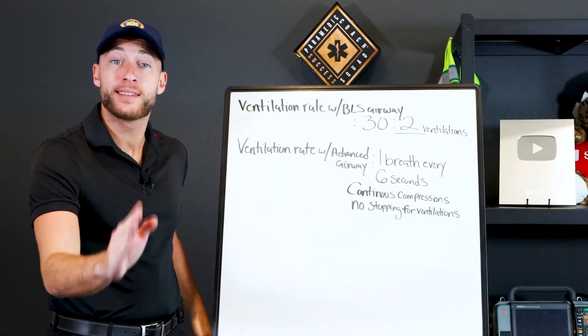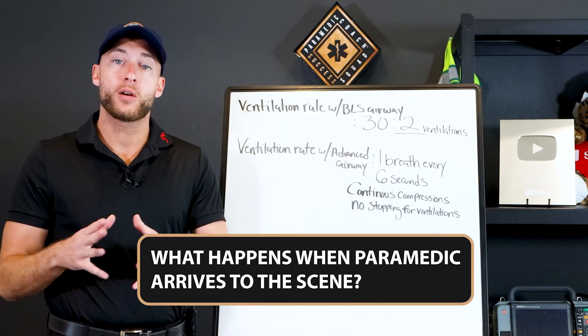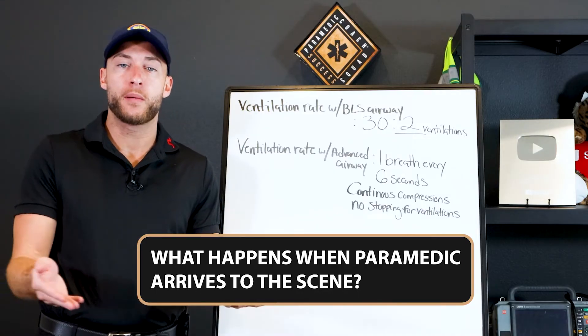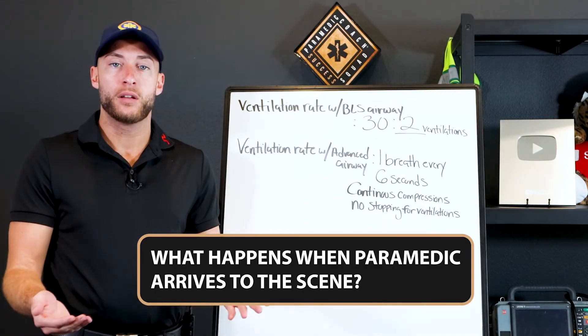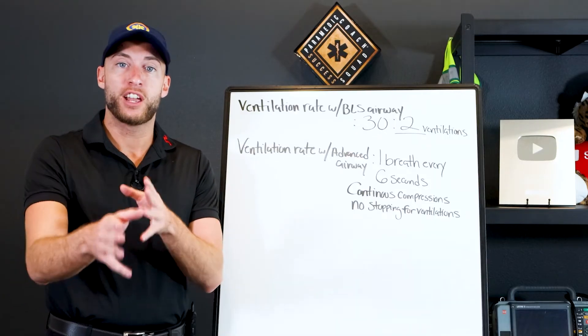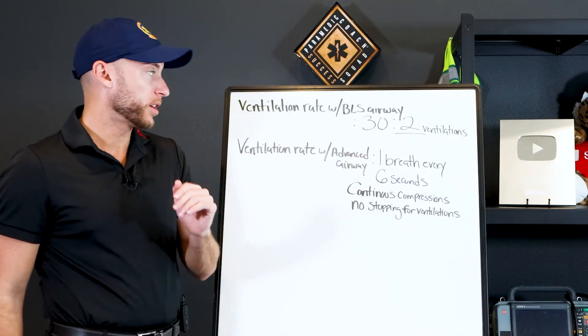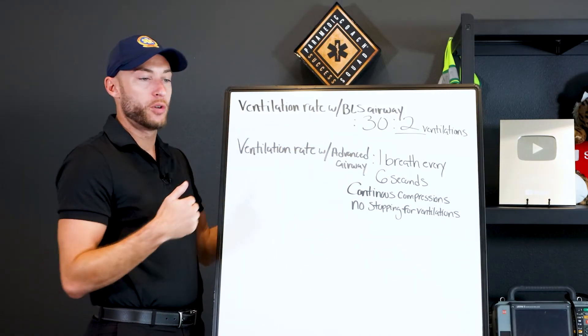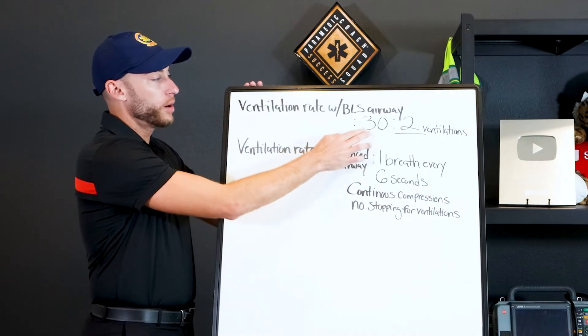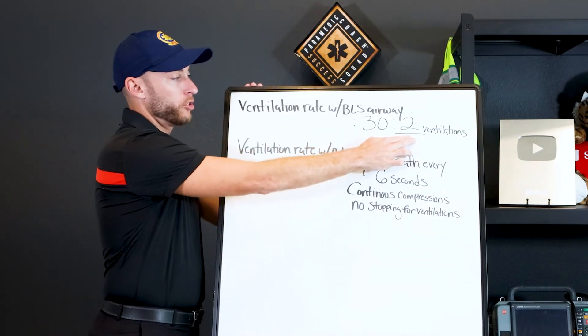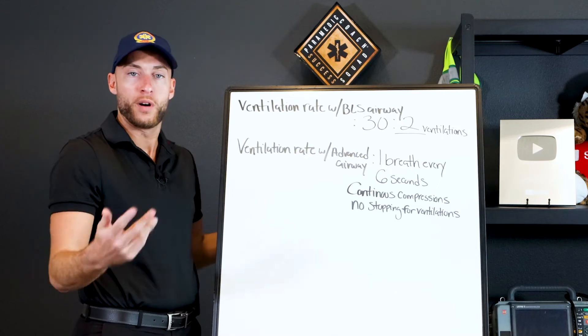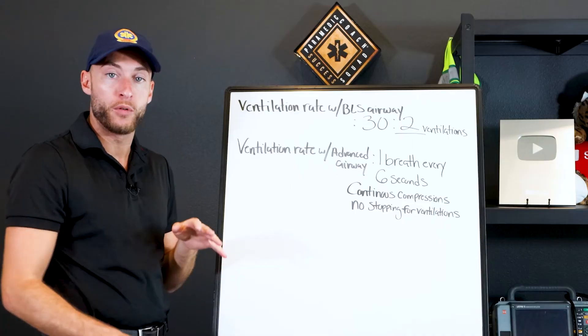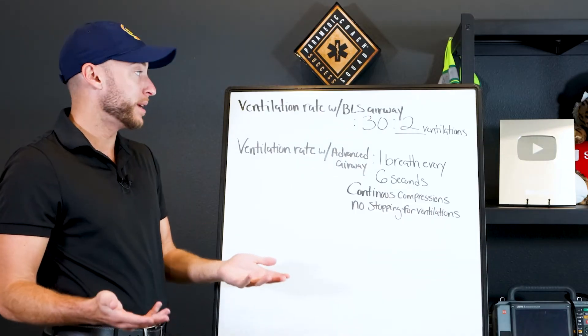So now with that being said, what happens when the paramedic arrives on scene? You're the EMT working with the paramedic. What happens when the paramedic arrives on scene and places an advanced airway? It changes everything. So let me explain. Let's just say here we are, you and your EMT partner are on scene, you're doing your BLS. It's 30 compressions for every two ventilations. We do 30 and two, 30 and two, in two minutes cycles. The AED is coaching us, helping us along. That's what we have at the EMT BLS level.